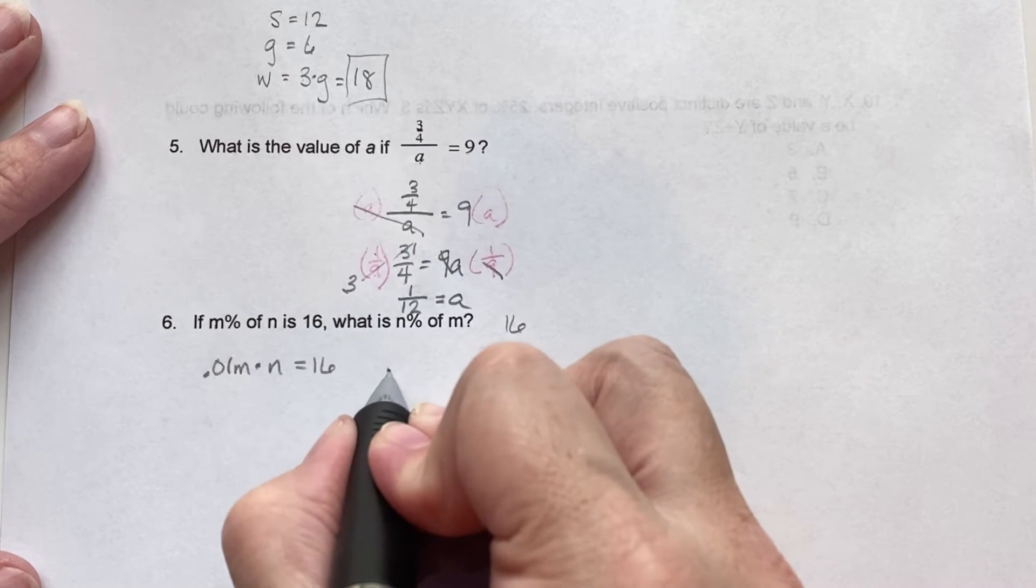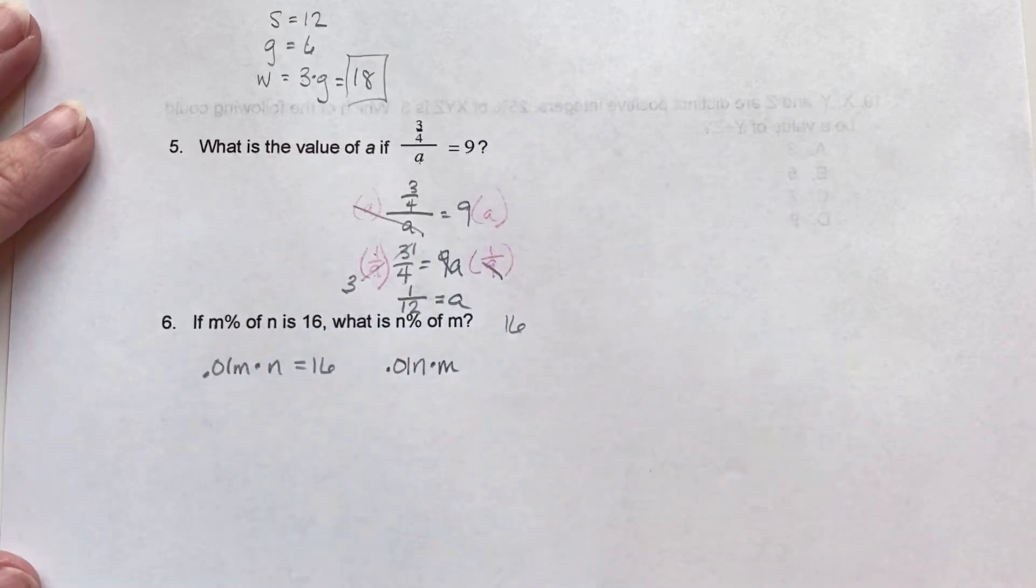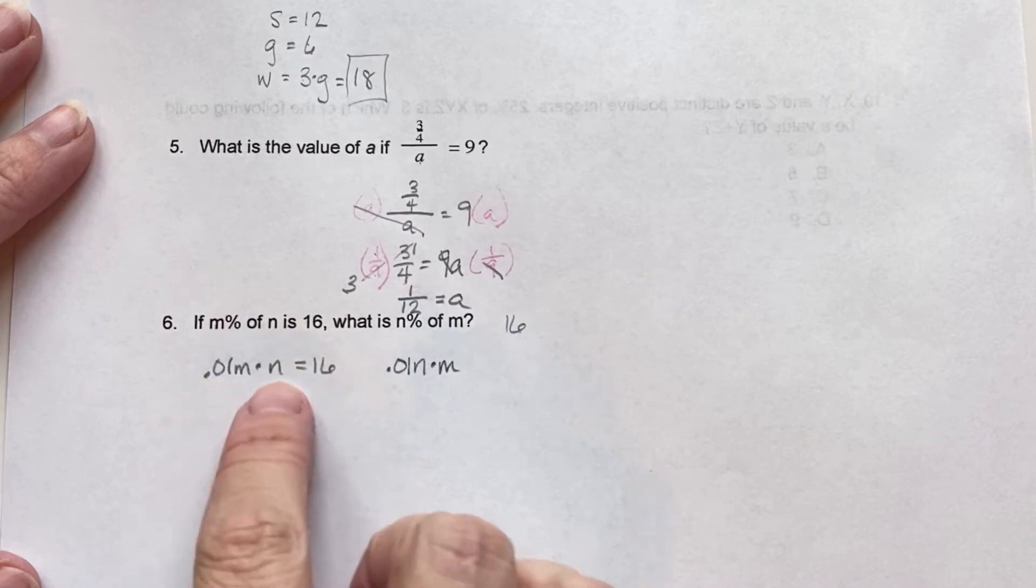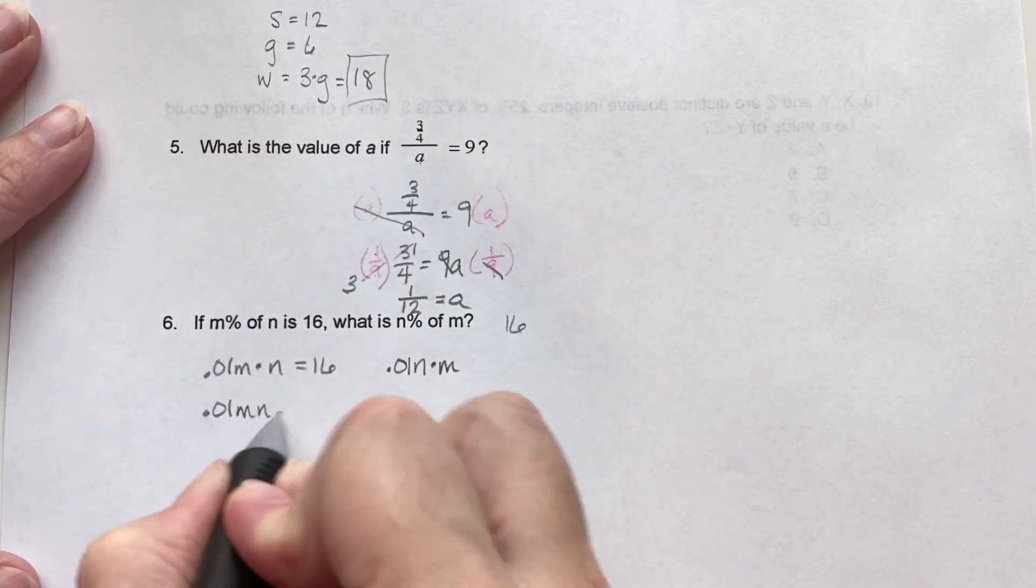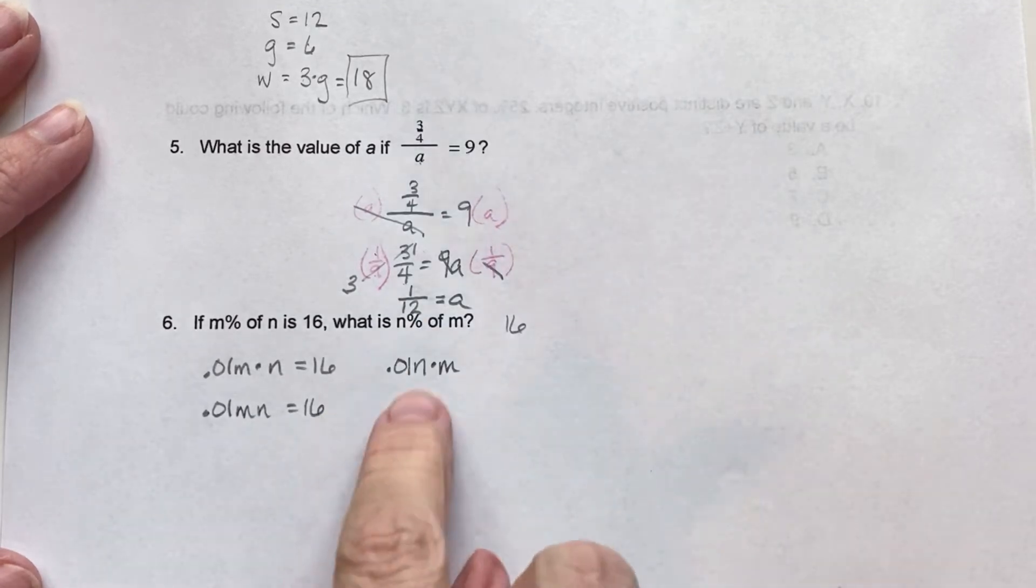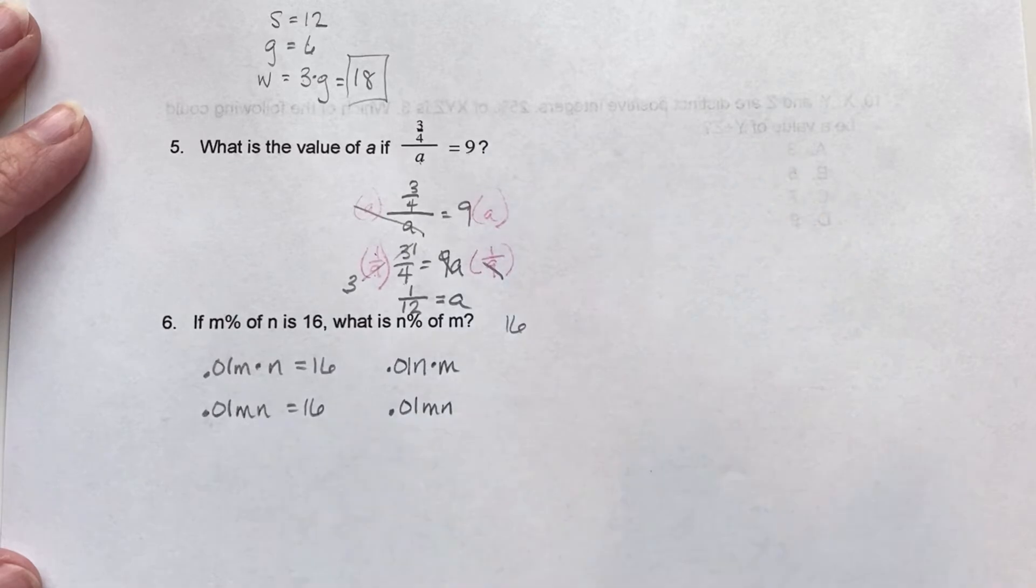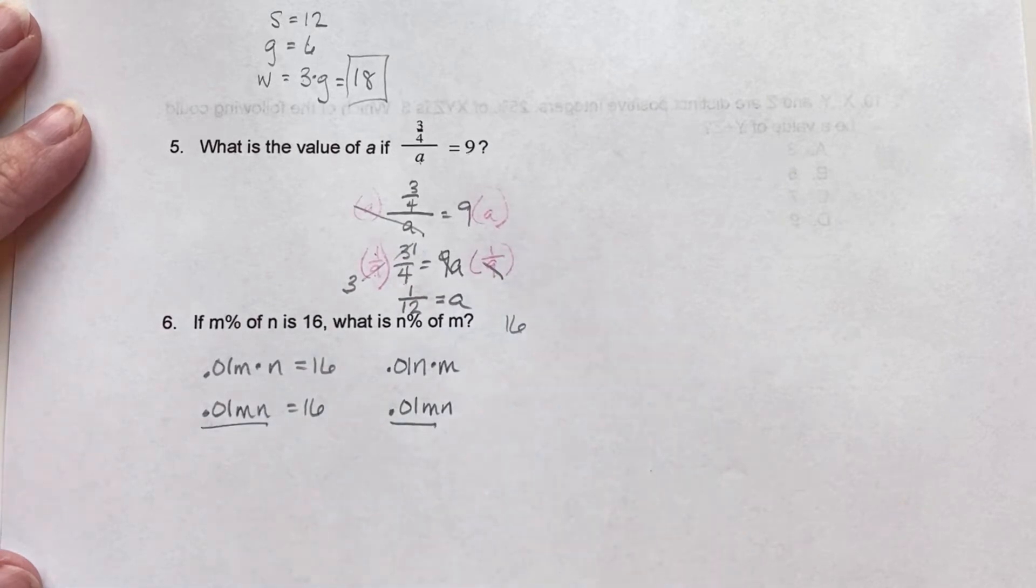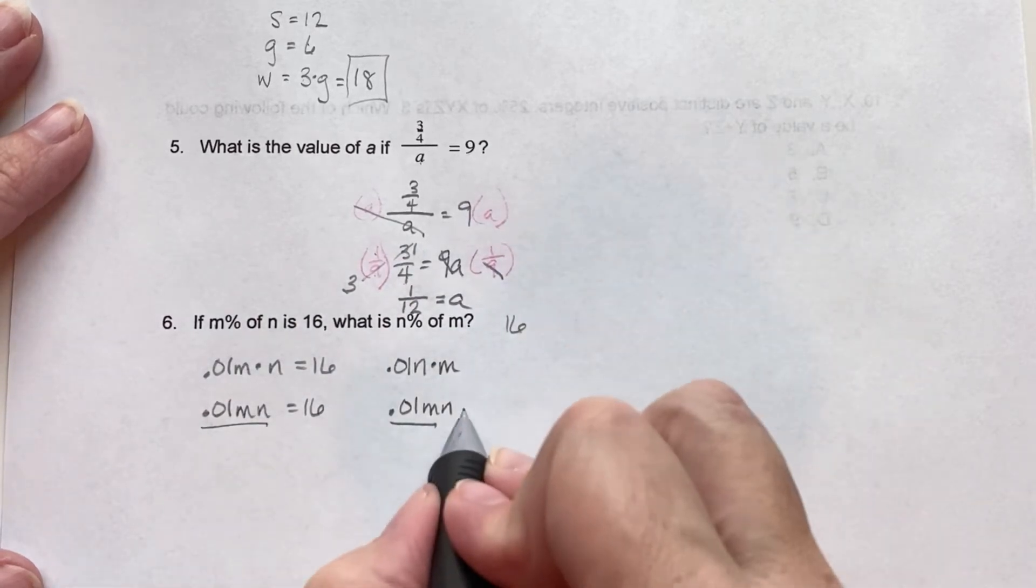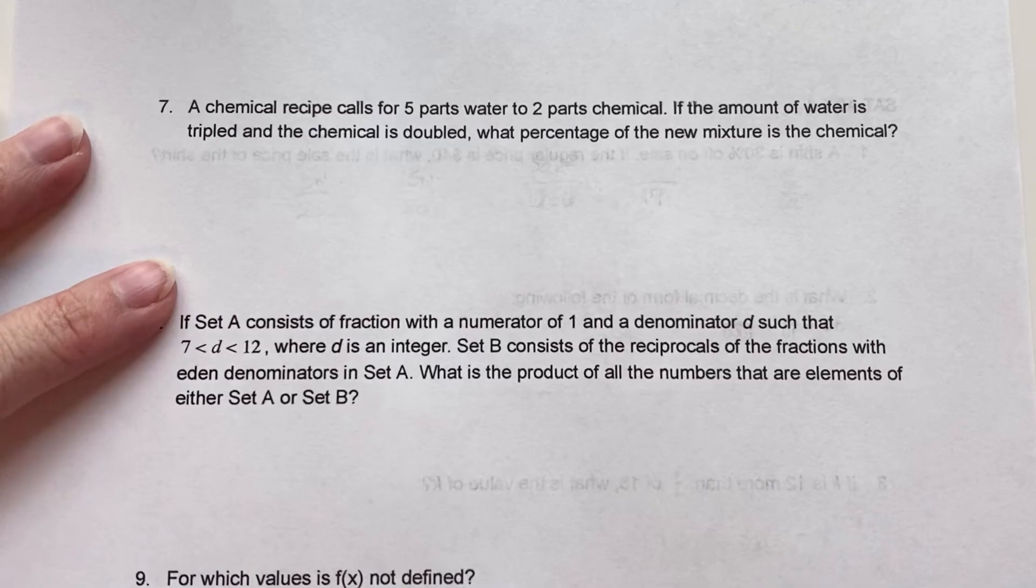Because m, 0.01% times n is equal to 16. So what is 0.01n times m? Well, if we drop the multiplication signs and reorder in alphabetical order, and we can do that because of the transitive property of multiplication, we'll notice that we have exactly the same thing. So that is equal to 16 also.